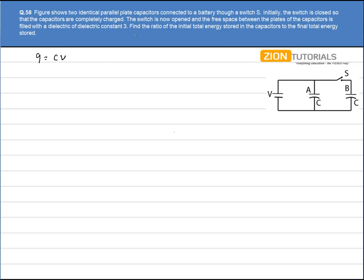Now the switch is opened and the free space between the two plates of the capacitor is filled with a dielectric constant of 3. Since the space between the two capacitor plates is filled with a dielectric, the capacitance C prime will become 3 times C because we know that C is given by epsilon K A by D. Since K is 3, the capacitance will become 3 times.